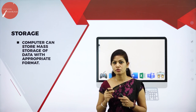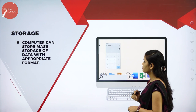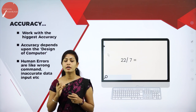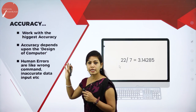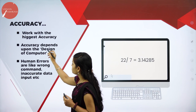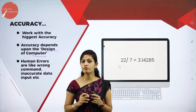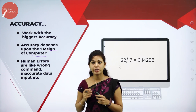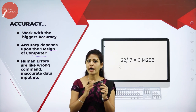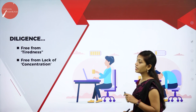The third characteristic is Accuracy. A computer can perform operations and process data faster with accurate results and no errors. Accuracy depends upon the design of the computer. Results can be wrong only if incorrect data is fed to the computer. If the input is correct, the computer gives accurate and exact output.